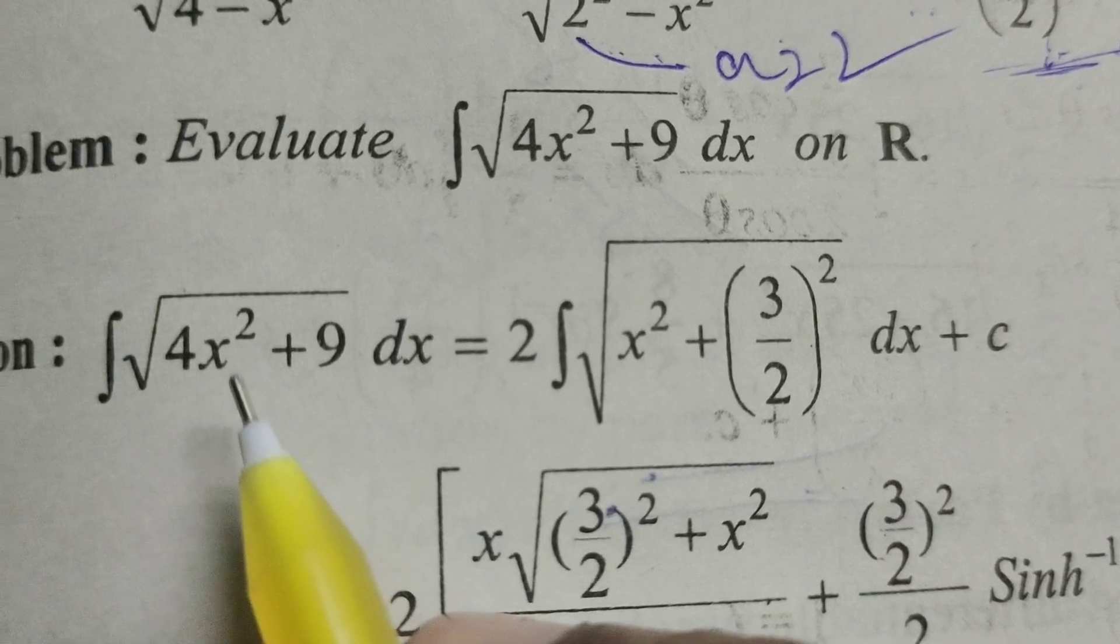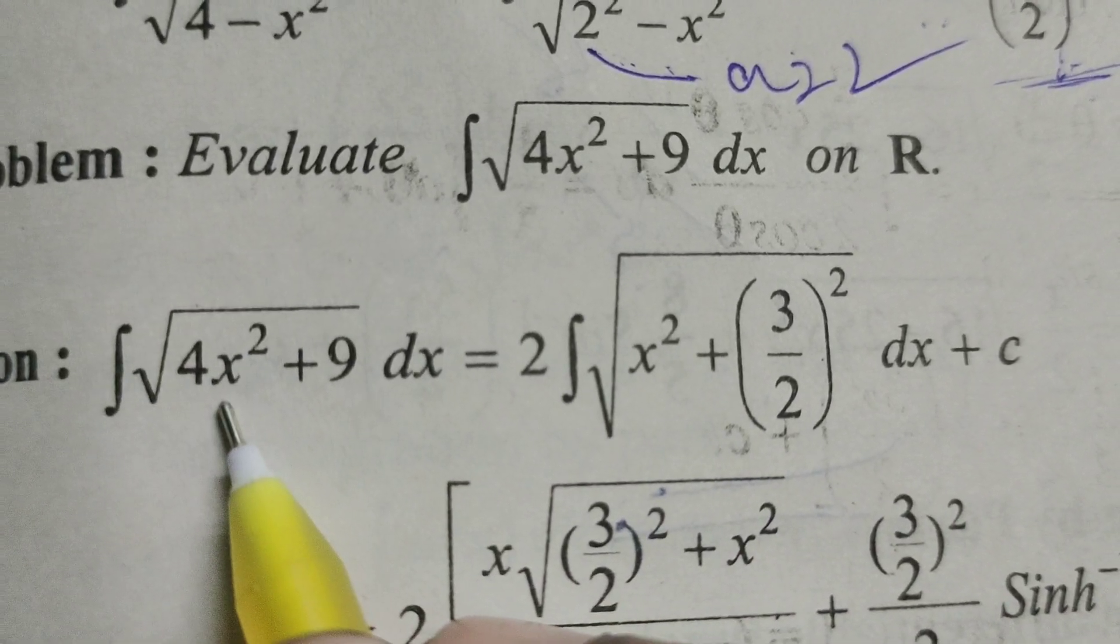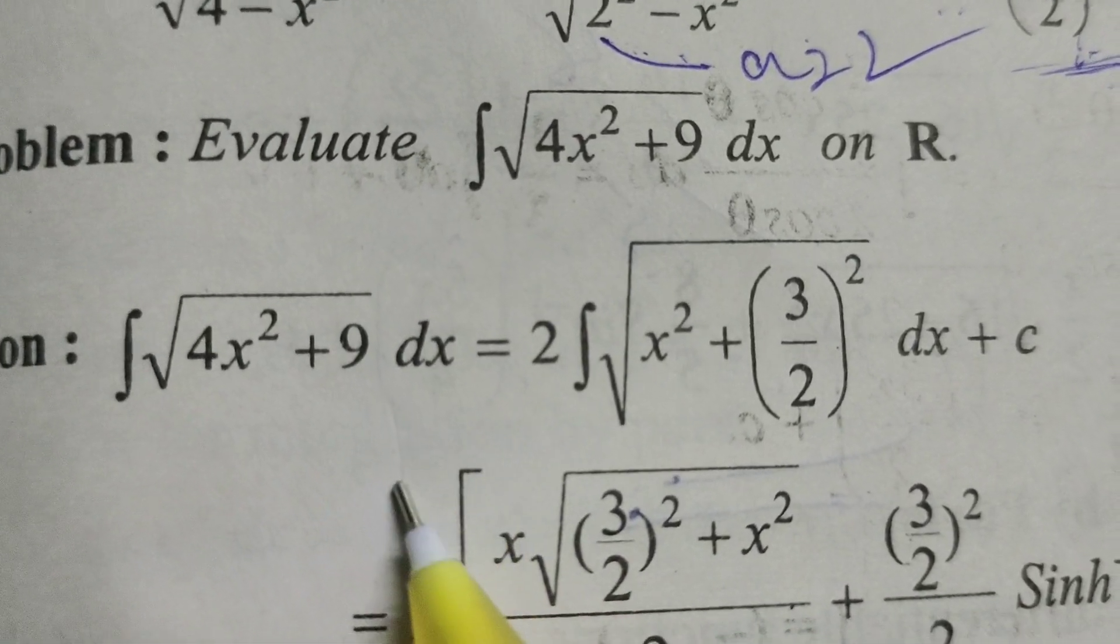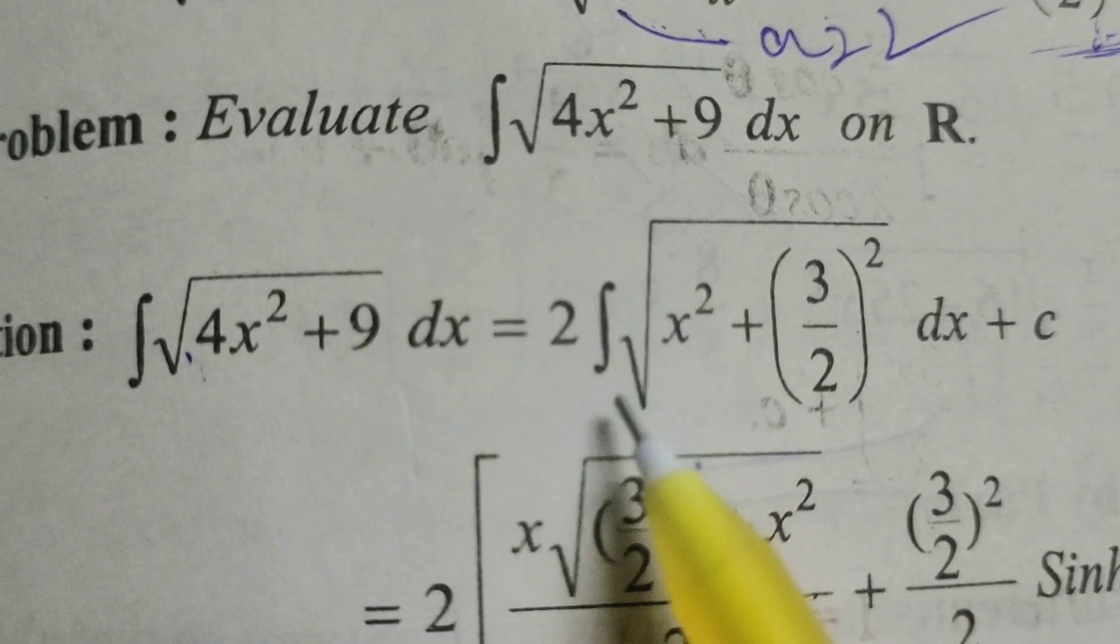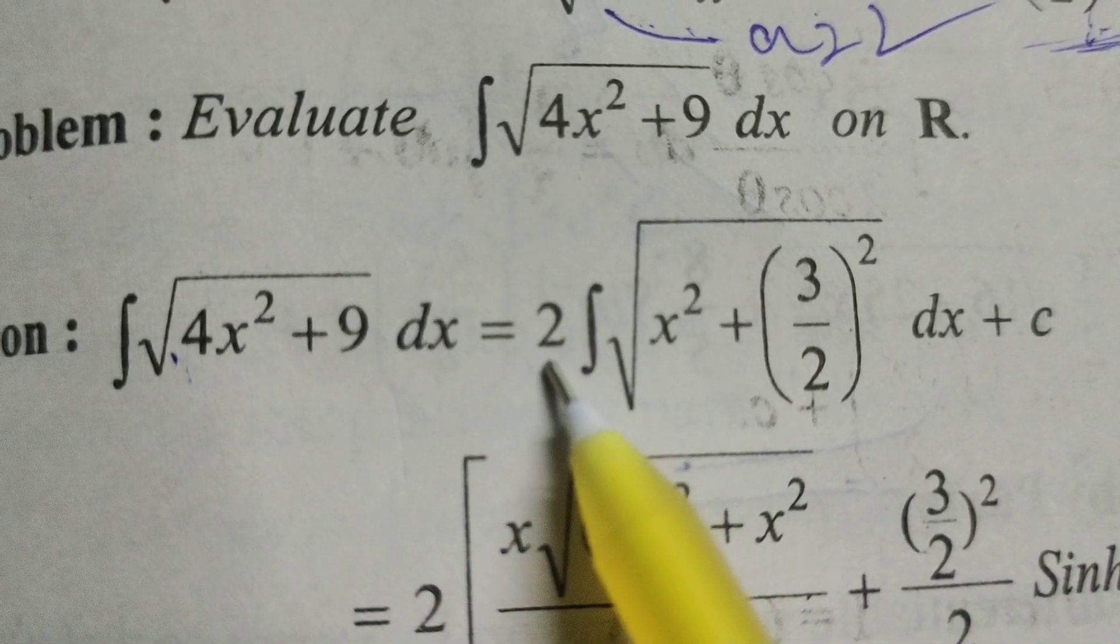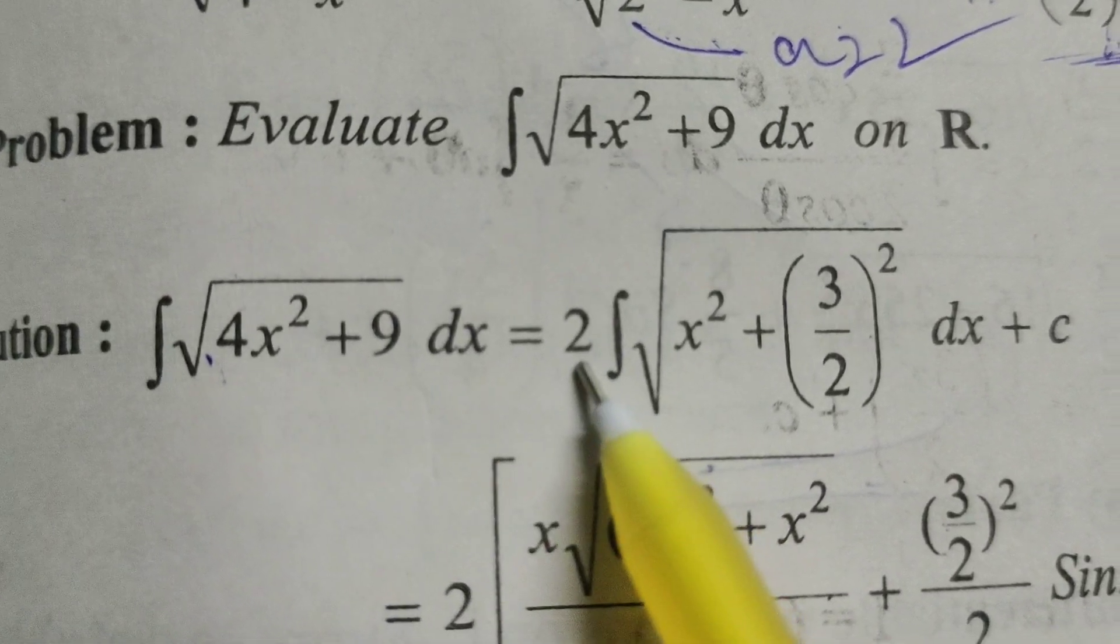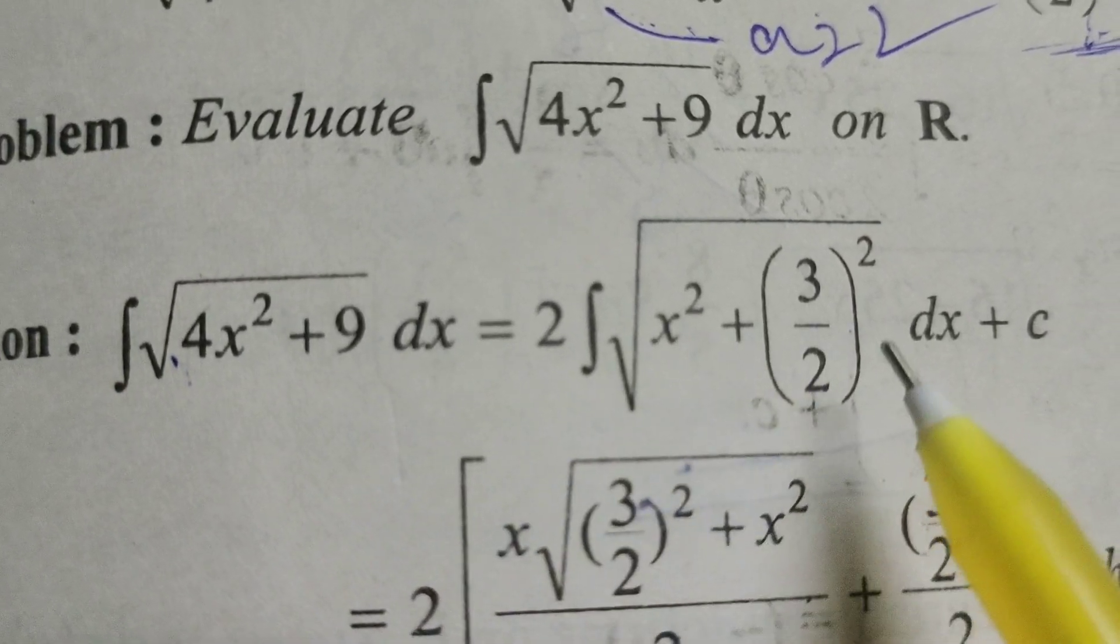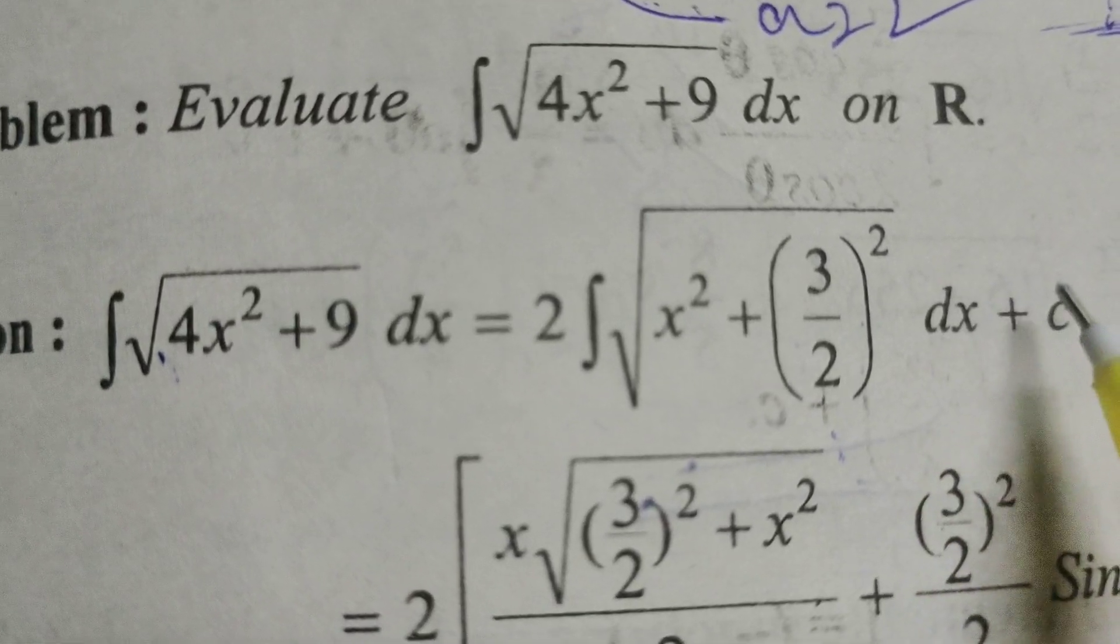Now here 4 is the common factor. Therefore 4 into x squared plus 9 by 4. Then in this 4, root of 4, removing the root, root 4 means 2. Here write x squared plus 9 by 4, write 3 by 2 whole square into dx.